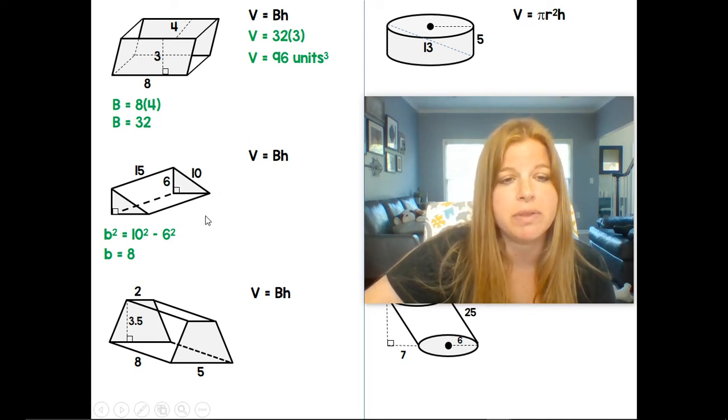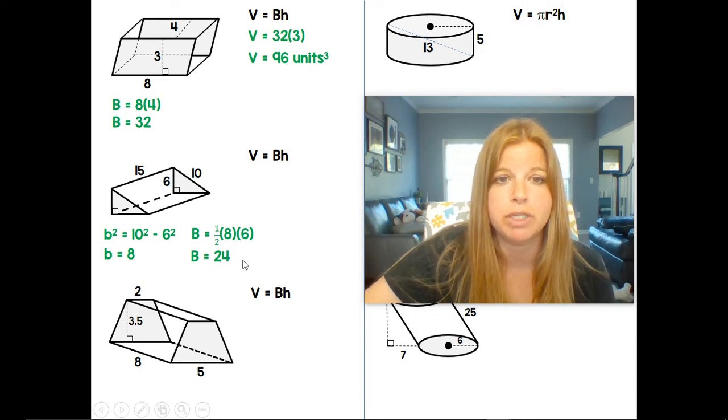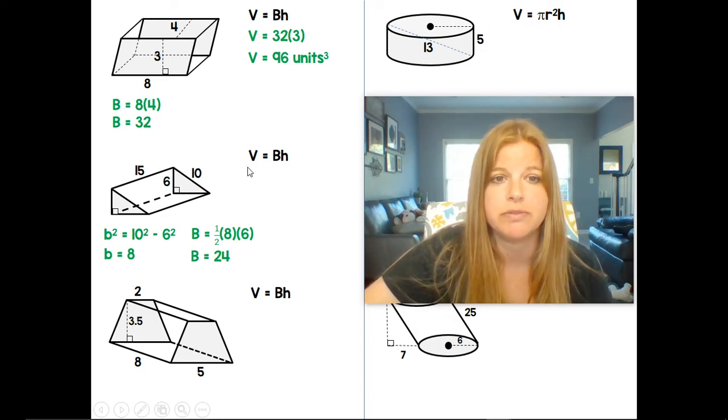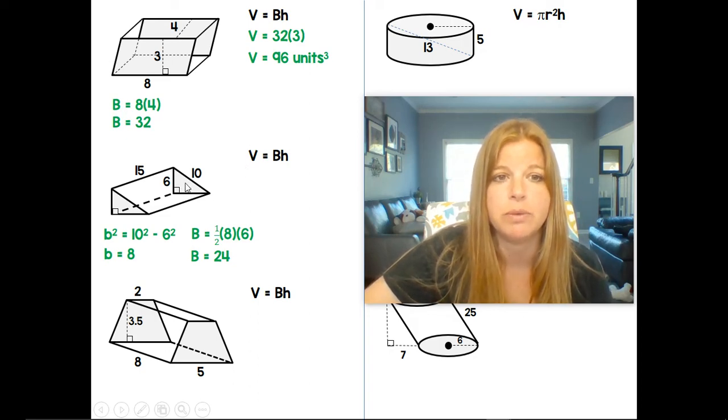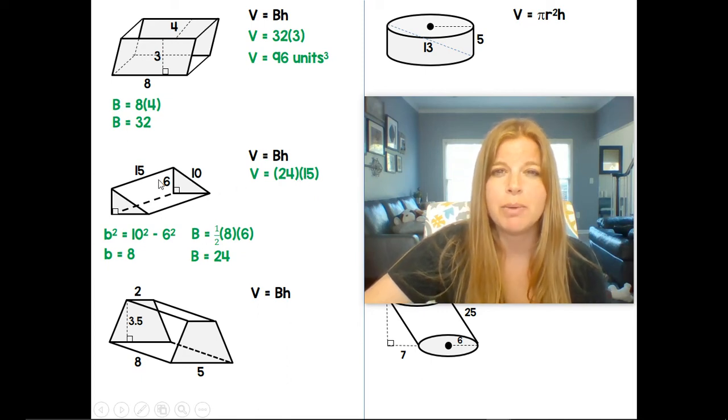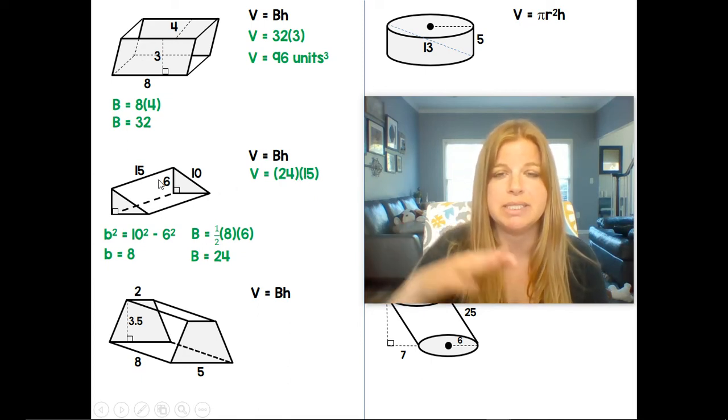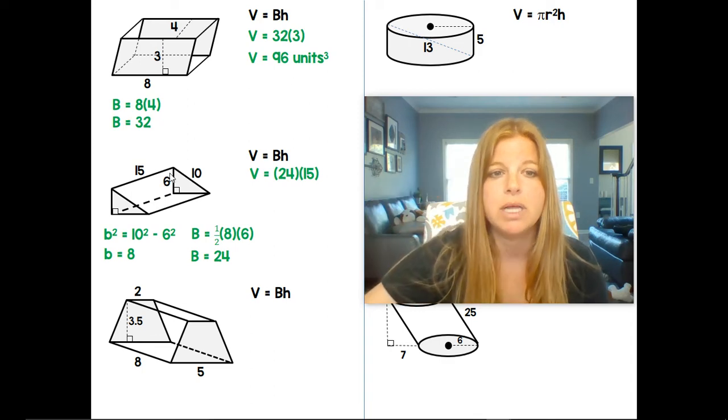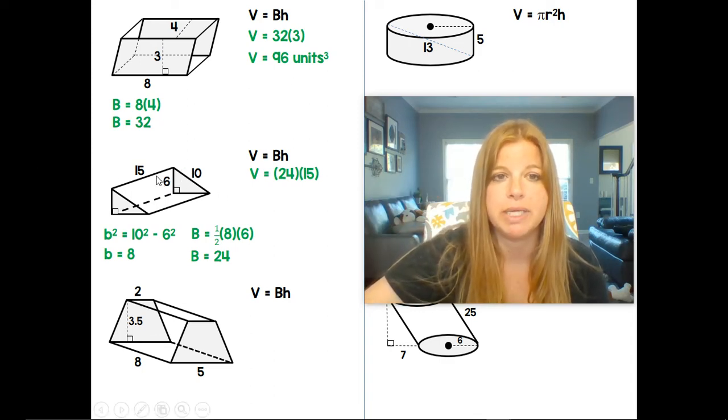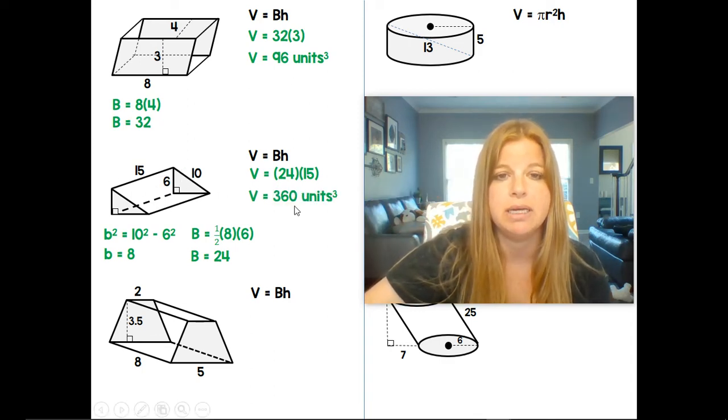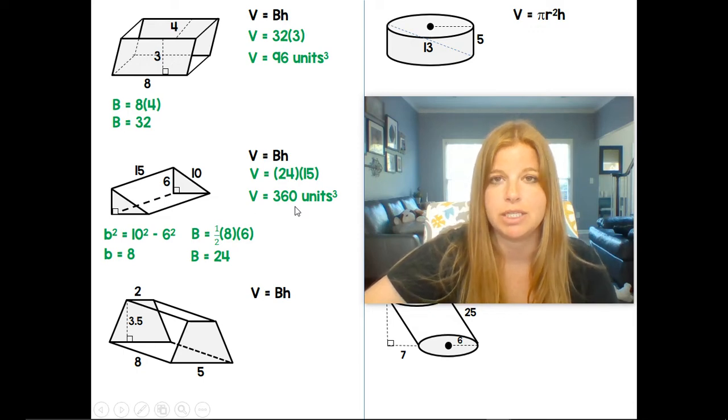So now I can do the area of the base. The area of the base would be 1 half base times height. So 1 half 8 times 6, which ends up giving us 24. Then I can actually do the volume. So the area of the base is 24 multiplied by the height of 15. Remember, height is the length from base to base. It doesn't always have to be vertical. So once you find the area of the base, this length here would be the height. And you end up getting 360 units cubed.